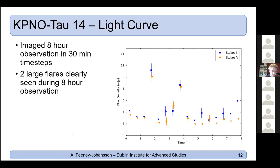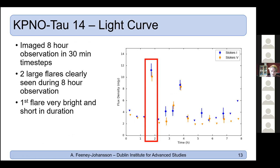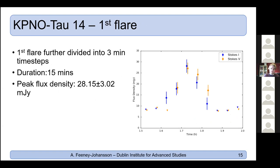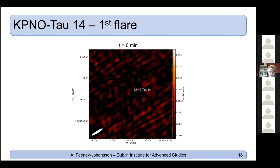Dividing the eight-hour observation into 30-minute time steps revealed two large flares from KPNO Tau 14. The first flare was very bright and short — less than half an hour — while the second lasted about two hours but was not as bright. Further dividing the first flare into 3-minute time steps showed it lasts about 15 minutes and peaks at 28 milijansky. An animation of the flare shows how quickly the flux rises and falls.